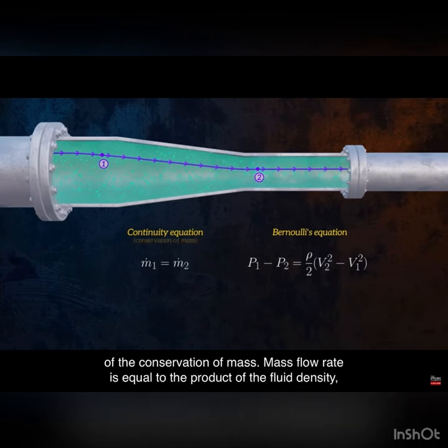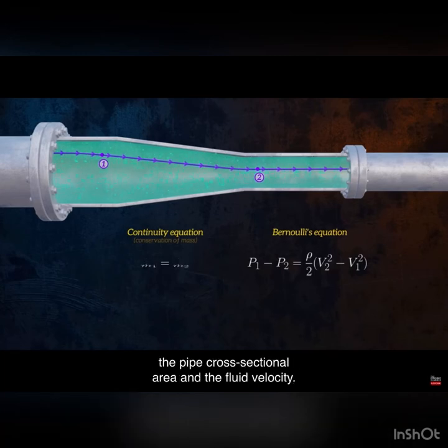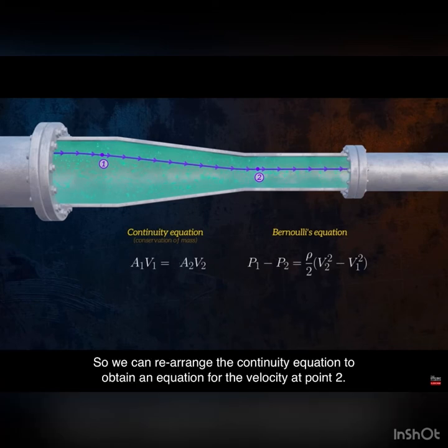Mass flow rate is equal to the product of the fluid density, the pipe cross-sectional area, and the fluid velocity. So we can rearrange the continuity equation to obtain an equation for the velocity at point 2.